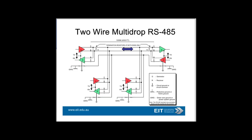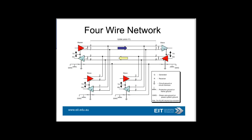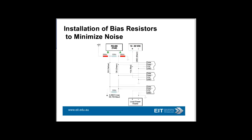Here's a typical example of an RS-485 network. One of the issues is to put in termination resistors to prevent reflection. Also, the other issue is to ensure your grounding is done properly to avoid common-mode voltage problems. Here's a four-wire network, and obviously there's the matter of minimizing noise.